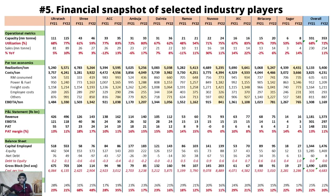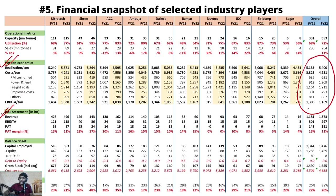This is a snapshot of the selected industry players — you can pause the video and look at the numbers in detail. It shows per tonne economics, revenue, EBITDA, PAT, and balance sheet details. One important highlight is that comparing FY21 and FY22: FY21 EBITDA was around 1300 rupees per tonne.